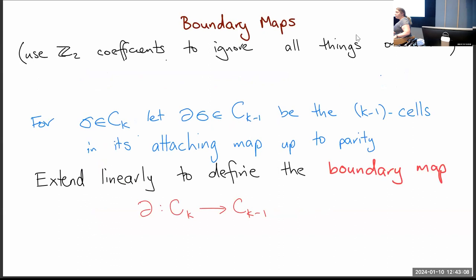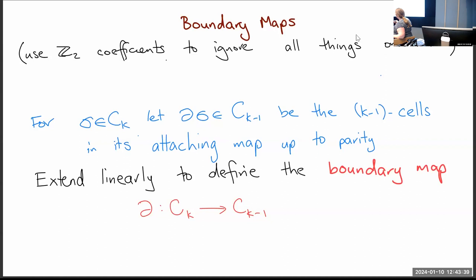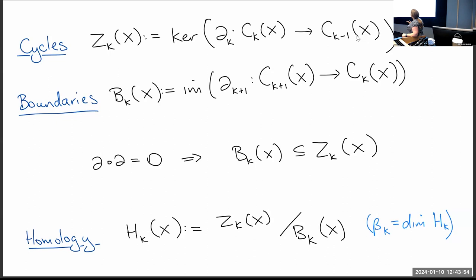Using the attaching map, we define the boundary of a cell. For every k-cell, we identify which (k−1)-cells lie in its boundary, and extending this linearly gives the boundary map — a linear map from the vector space of k-cells to (k−1)-cells. Cycles are things whose boundary is empty; boundaries are things that are the boundary of something; and homology is equivalence classes of cycles modulo boundaries.